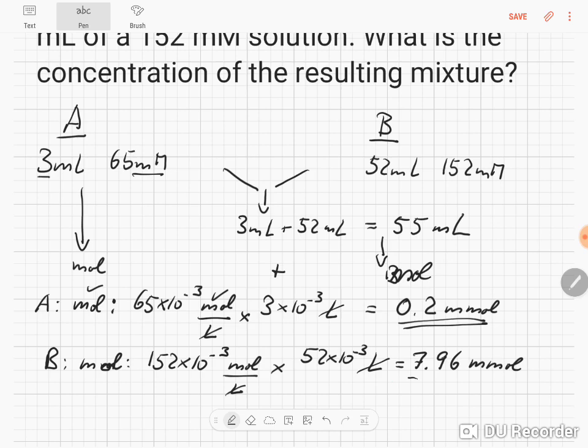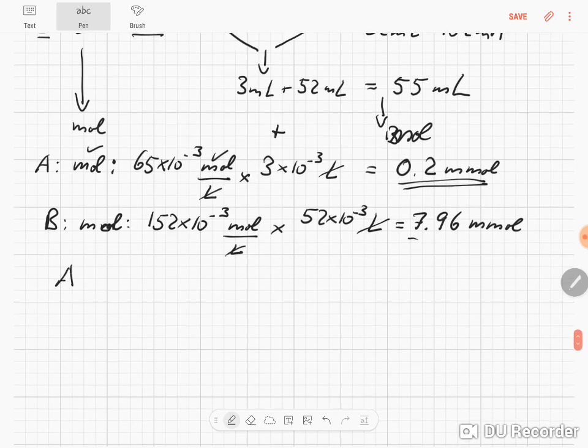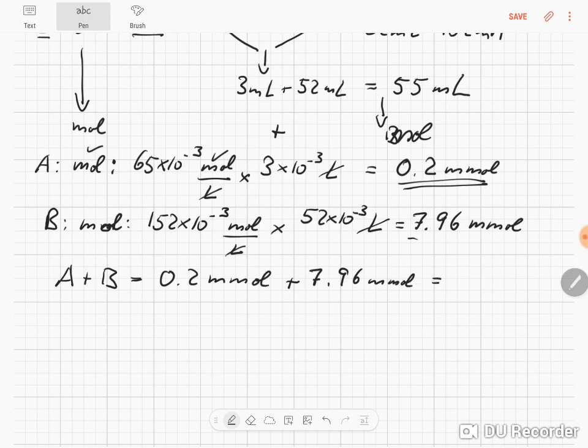Now we add the millimoles from A plus B together. That gives us 0.2 millimole plus 7.96 millimole, which equals 8.16 millimole. So we have 8.16 times 10 to the minus 3 mole.